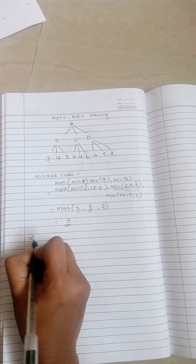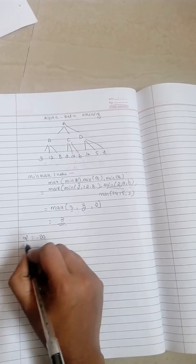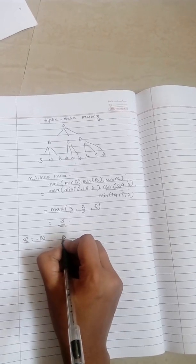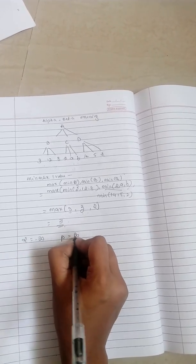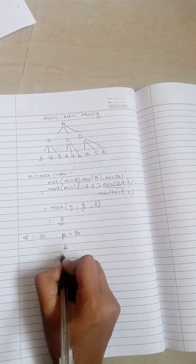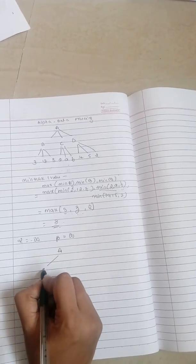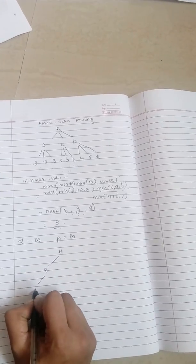In this there are two things: alpha will hold the value of negative infinity as I explained in min-max algorithm, and beta will hold the value of infinity. This alpha-beta pruning will follow depth first search. What do you mean by depth first search? Let's consider root A will follow this path B.